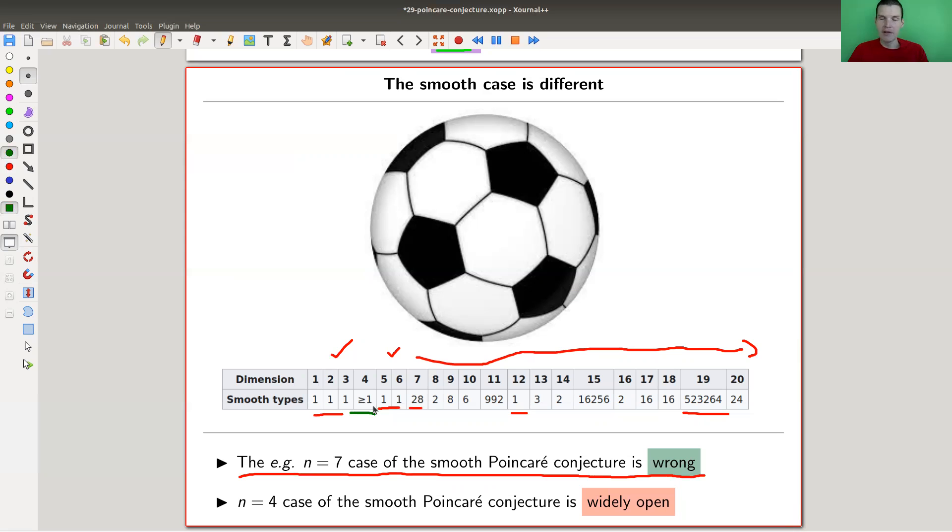Let me comment on the 'widely open': while the three-dimensional case everyone believed was true - Poincaré thought it's obvious in the beginning, everyone believed it's true, just the proof took a while.